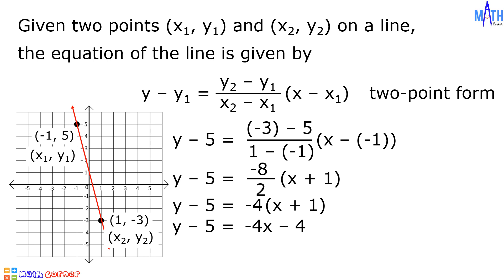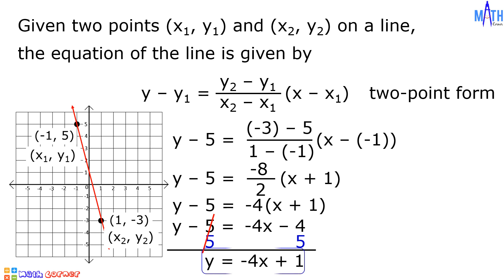Let us add positive 5 on both sides of the equation. Since negative 5 plus 5 is equal to 0, then we have y equals negative 4x plus 1. This is the equation of the line in slope-intercept form.